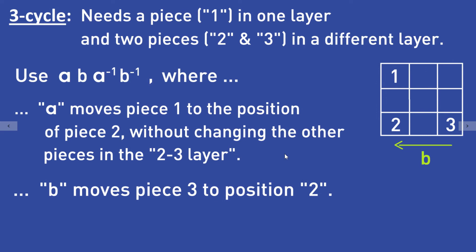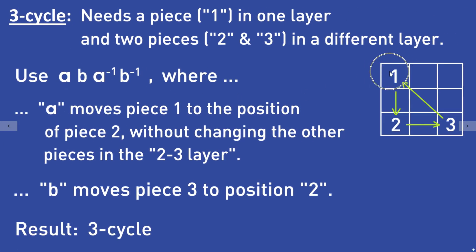Algorithm B moves piece 3 to position 2. Now that you know algorithms A and B, you perform the commutator: use A, then B, then reverse A, then reverse B. After you are done, piece 1 has moved to position 2, piece 2 has moved to position 3, and piece 3 has moved to position 1. That is how you perform a 3-cycle.